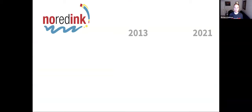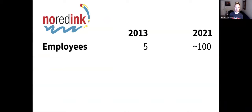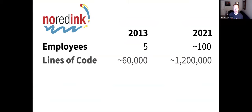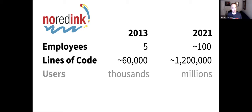Comparing some things that have changed between 2013 and now: we had five employees then. Probably by the end of the year we will be over 100 employees — about a quarter will be engineering, and the rest is sales, curriculum, and so on. When I started, I checked out the codebase and it was almost 60,000 lines of code. Now it's a little over 1.2 million all told.